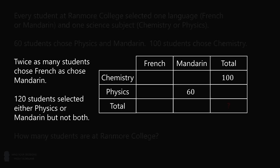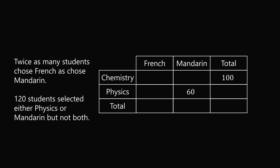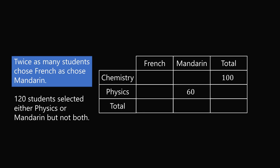Let's get started with the information that twice as many students chose French as Mandarin. So let's say the total number of students that chose Mandarin is x, then the total number of students that chose French is 2x. So we'll put this into the table.